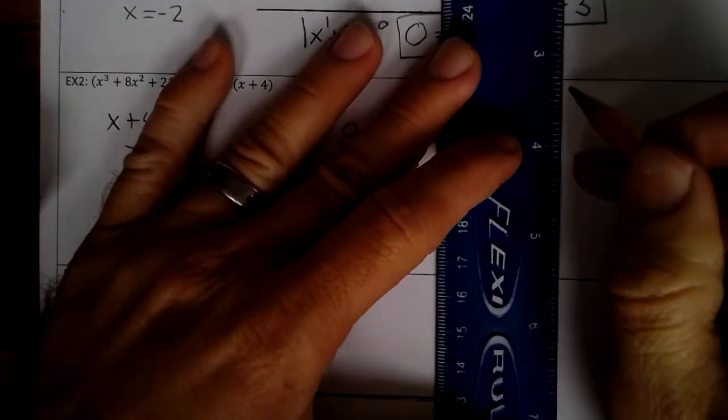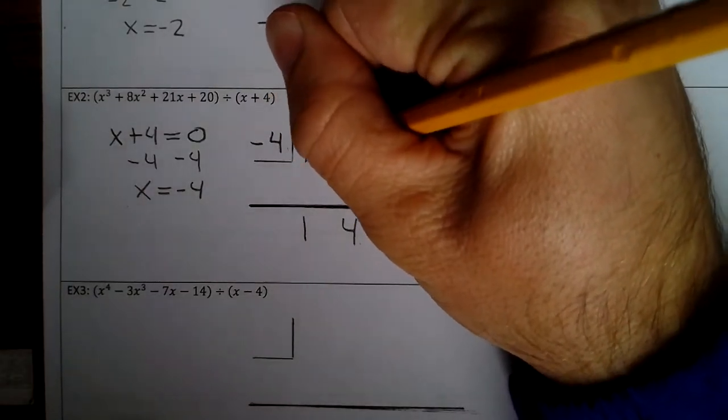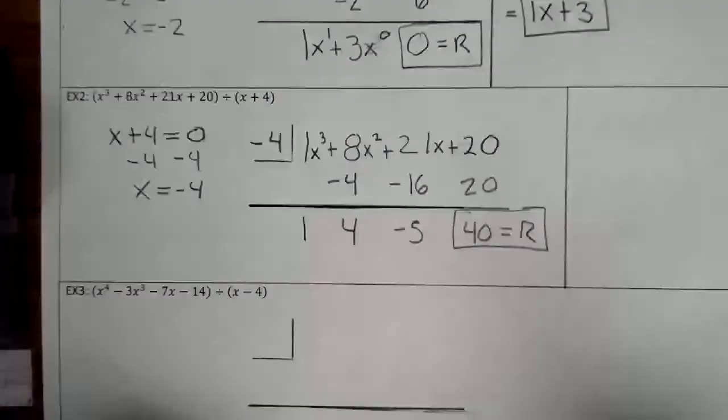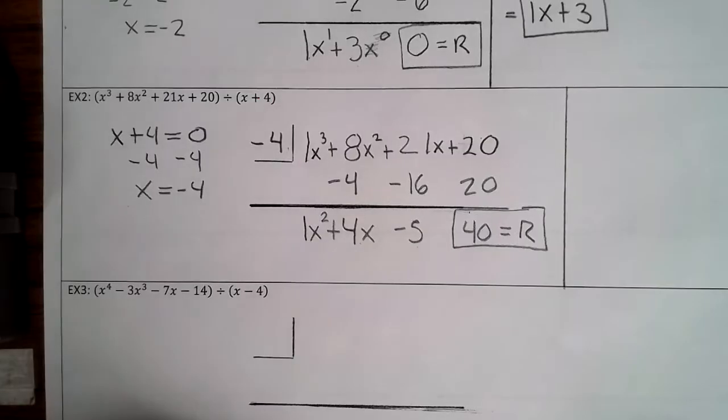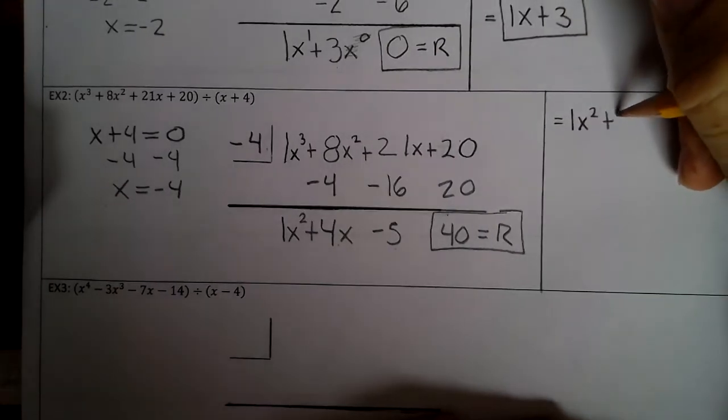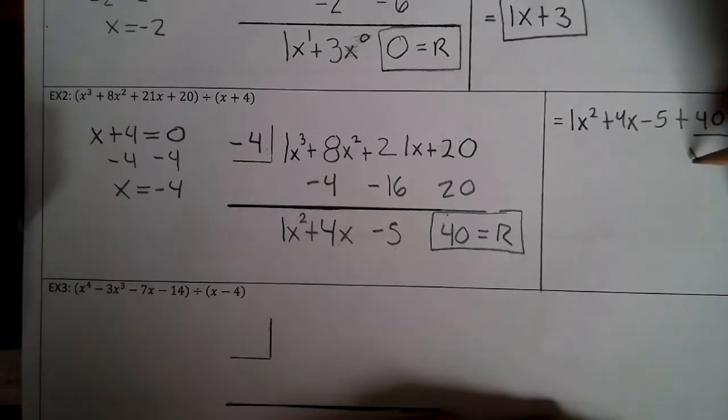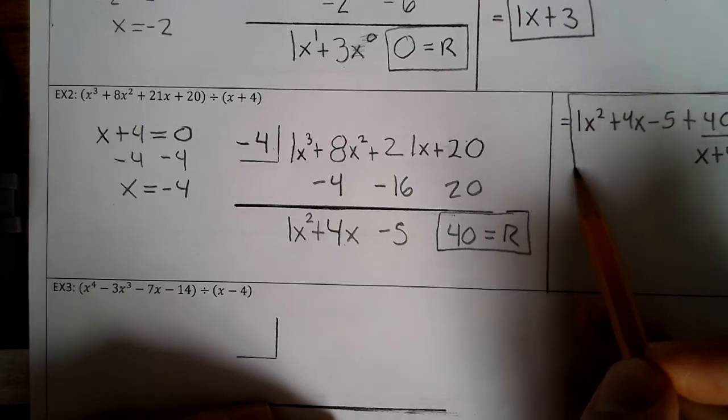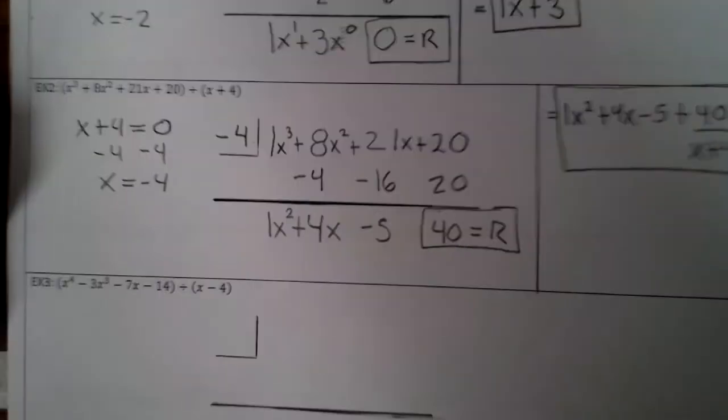Alright. Now this was 1x³ + 8x² + 21x + 20. And when you divide the exponents decrease by 1, so this becomes 1x² + 4x - 5. So your answer is 1x² + 4x - 5 plus 40 divided by x + 4.